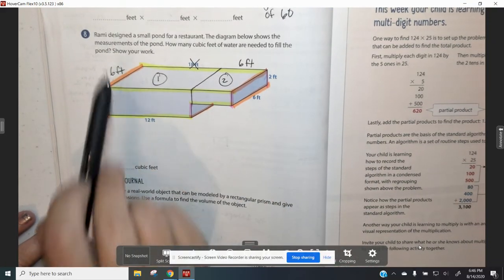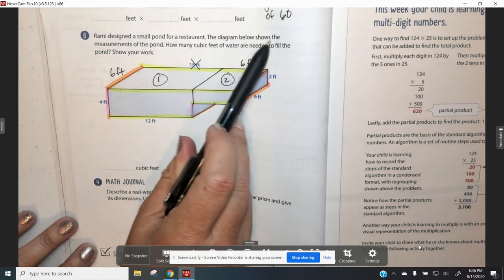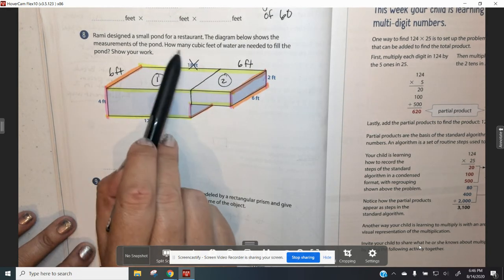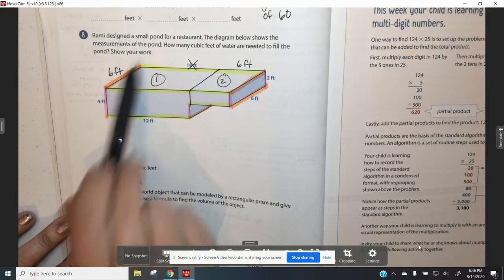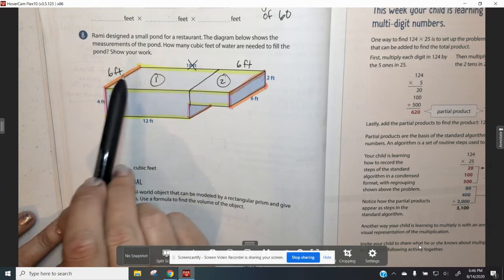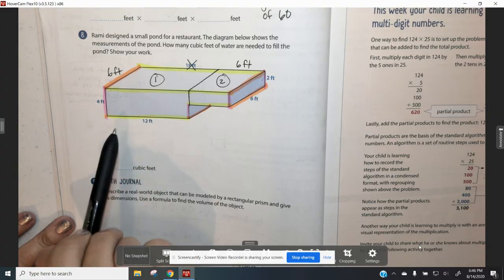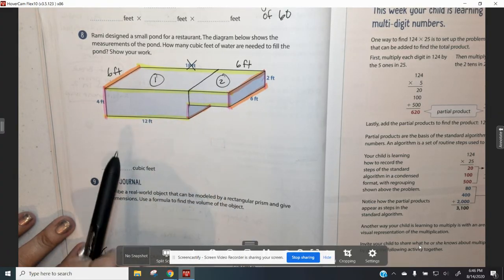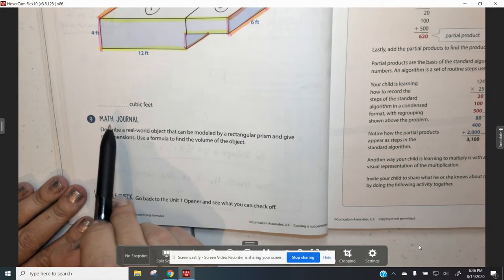On number eight, Raimi designed a small pond for a restaurant. The diagram below shows the measurement of the pond. How many cubic feet of water are needed to fill the pond? Show your work. So you've got shape one, I broke it apart for you and you have the numbers you need. Shape two, you have the numbers you need. Go ahead and find the volume of each shape, add them together and tell me the total cubic feet.